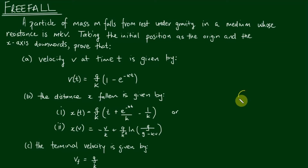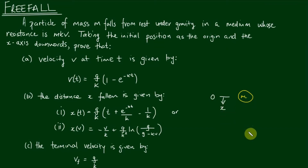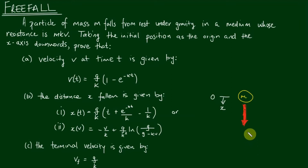So let's say we have a ball of mass m. Its initial position is at zero. The positive x direction is downwards and it is falling under the influence of gravity. Now let's apply some forces to this ball of mass m. One that should be obvious is the weight — I'll depict the force of weight with a thick red arrow downwards, labelled w which equals mg, mass times gravity.